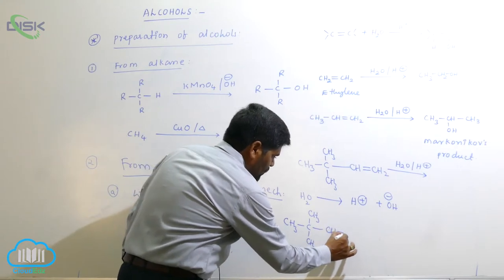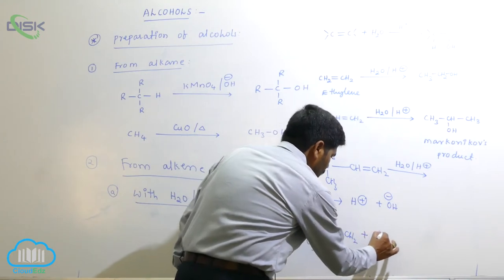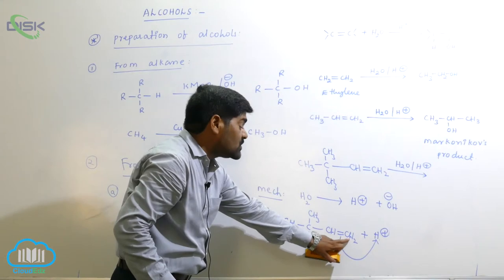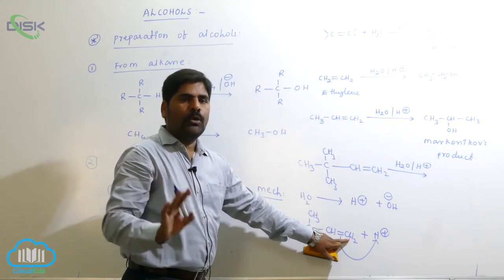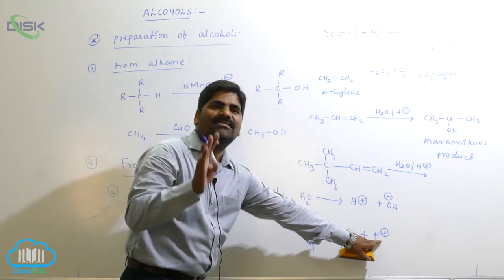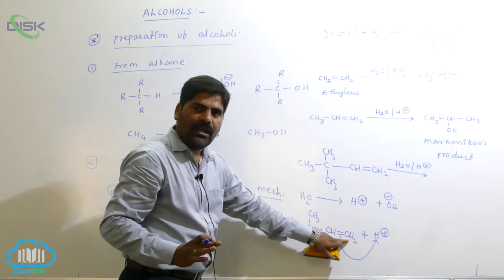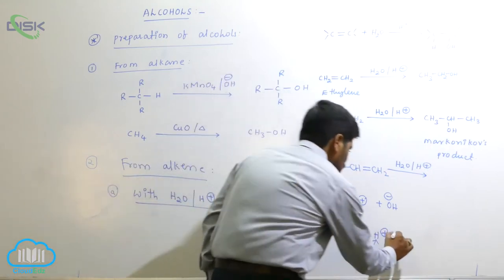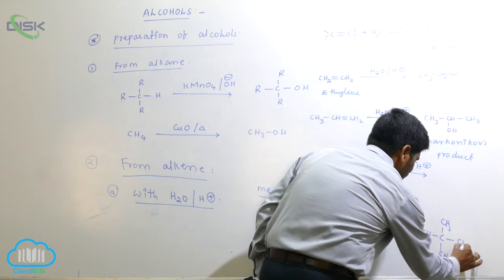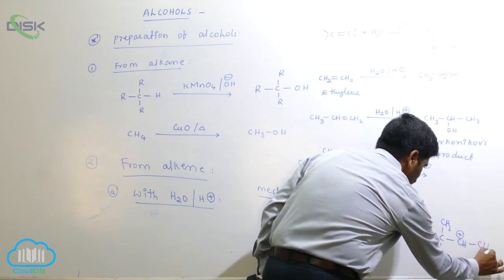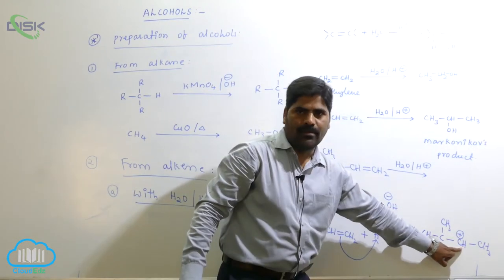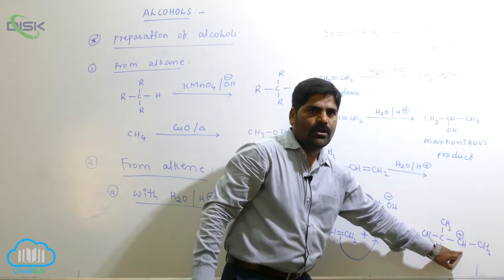In the mechanism, H⁺ always attacks the double-bonded carbon atom containing more hydrogens (electrophilic addition), while OH⁻ (the nucleophile) adds to the carbon with fewer hydrogens. After H⁺ addition, we get a carbocation: CH3-CH⁺-CH3 type, which is connected to two carbon atoms — a secondary carbocation.